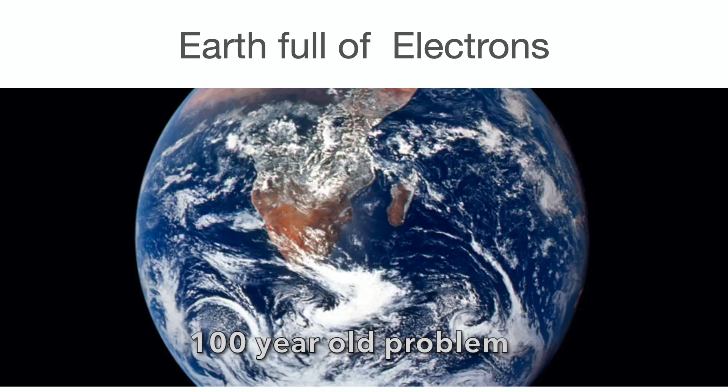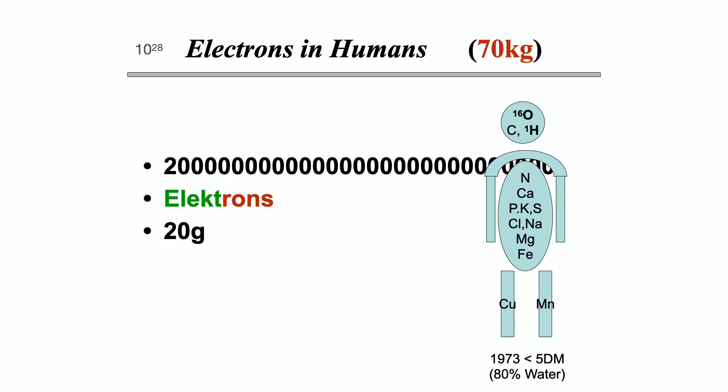Einstein's theory combined with thermodynamic principles. The mass of a 70 kg person consists of atoms. All atoms contain electrons. Humans are made up of 80% water. In total, there are 20 grams of electrons.